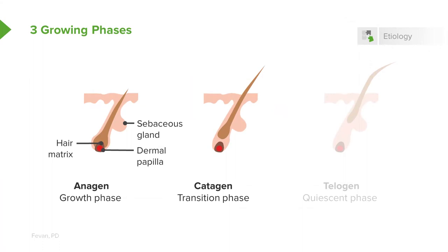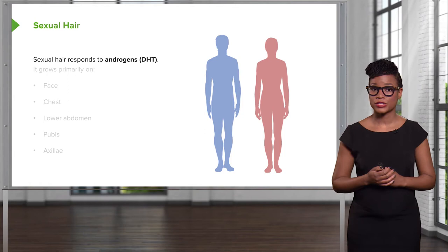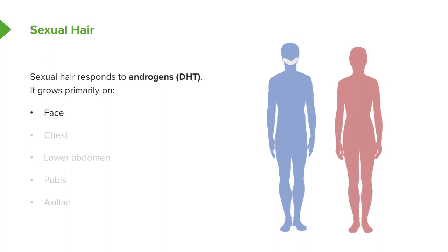Sexual hair responds to androgens, specifically DHT or dihydrotestosterone, the most active form of testosterone. Sexual hair primarily grows on the face — normally in a man, abnormally in women — which is a cause for hirsutism.